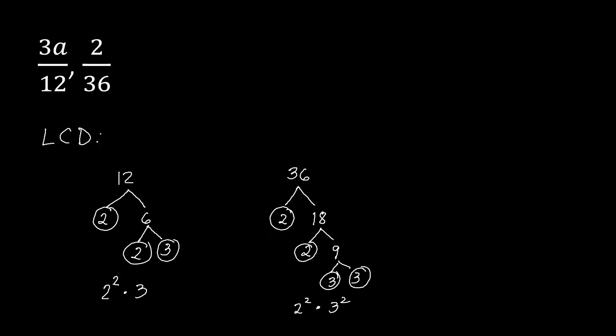Now we write the LCM. Using prime factorization, we list all the factors. We have 2 — looking at both numbers, we take the highest exponent, which is 2 squared. Then for 3, we take the highest exponent, which is 3 squared. So our LCM is 2 squared times 3 squared, which is 4 times 9, equal to 36. So our LCD is 36.